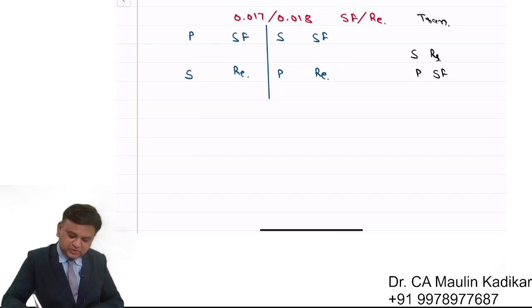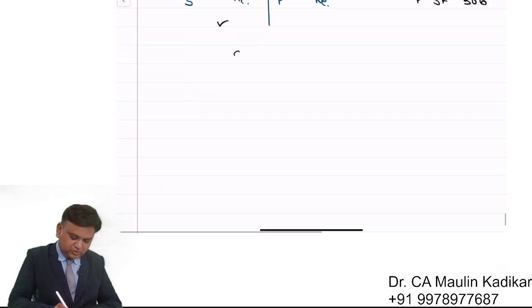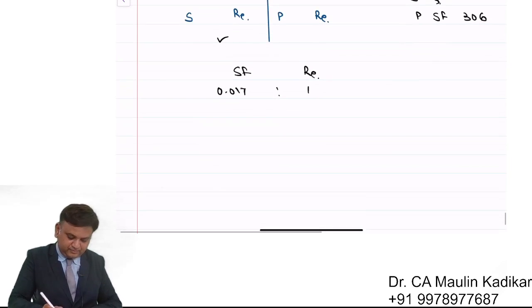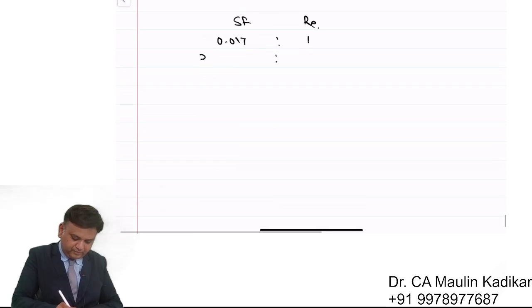So what do they need? They need 306 Swiss francs. Sell of rupees and purchase of Swiss francs, this is the rate applicable. So Swiss franc and rupee. 0.017 Swiss francs is equal to 1 rupee. 306 Swiss francs is equal to how much rupees? That is the question.